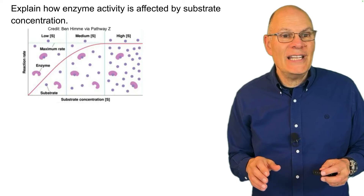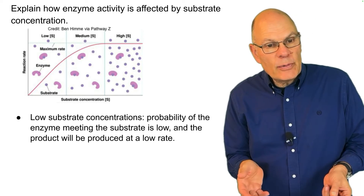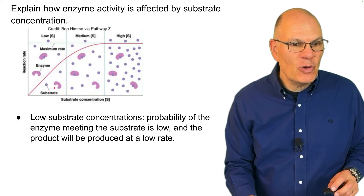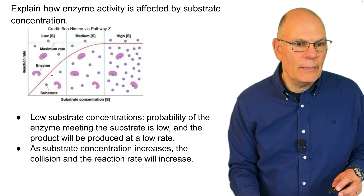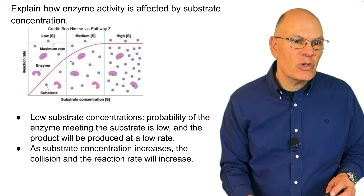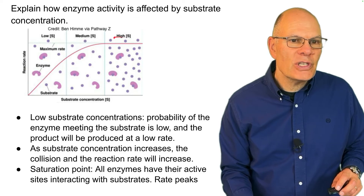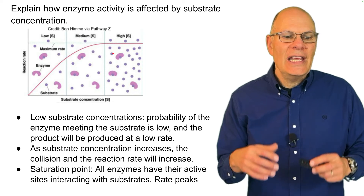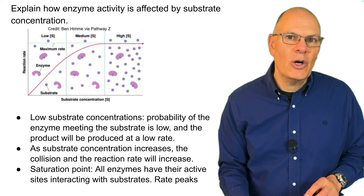Explain how enzyme activity is affected by substrate concentration. With low substrate concentrations, the probability of the enzyme meeting its substrate is low, and the product is produced at a very low rate. As substrate concentration increases, the collision and reaction rate also increase. But at a certain point, you reach a saturation point where all the enzymes have their active sites interacting with substrates, so there's a peak in rate and it does not go any higher.